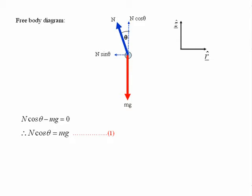Therefore, N cos theta equals mg. In other words, the vertical component of the normal reaction force balances the weight.